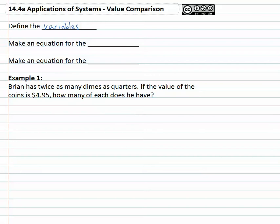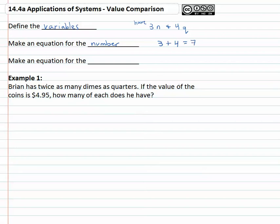We're going to be working first with value problems where we'll have something like finding that there are three nickels and four quarters. As we set up these problems, we're going to make an equation for the number of coins we're using. The number of coins in this example would be three nickels plus four quarters — a total of seven coins. This has nothing to do with the five cents or twenty-five cents, just the number of things that we have.